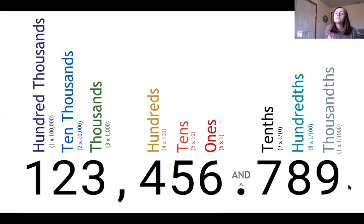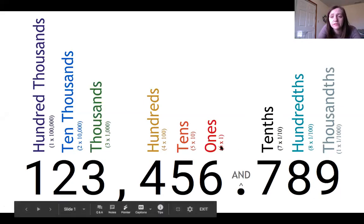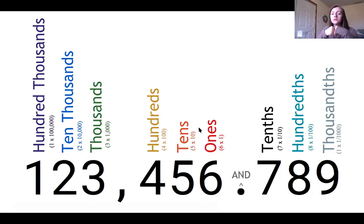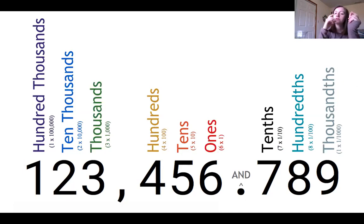So what this means when we're writing in expanded form, as I showed you here in the parentheses, is that for the ones place, to find the value of that place we have to take the number there times one. To find the value of the tens place, we have to take that number times ten, because whatever number is in that place, that value equals that number times ten because it's in the tens place. That goes the same for the hundreds, thousands, ten thousands, all of that.